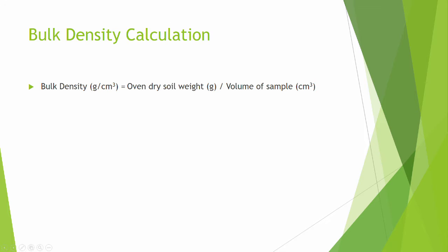To calculate the bulk density, simply divide the dry mass of the soil by the volume of the soil.